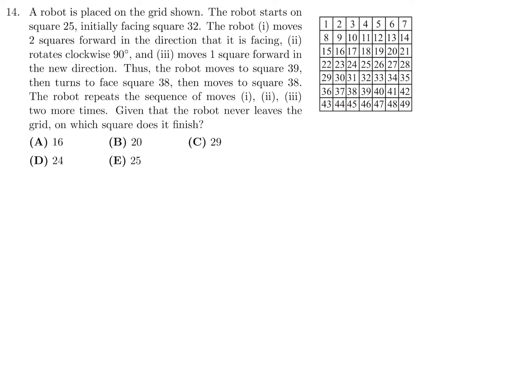A robot is placed on the grid shown. The robot starts on square 25, initially facing square 32. The robot moves two squares forward in that direction that it is facing, rotates clockwise 90 degrees, and moves one square forward in the new direction. Thus, the robot moves to square 39, turns and faces square 38, and then moves to square 38. The robot repeats the sequence of moves one, two, three two more times.